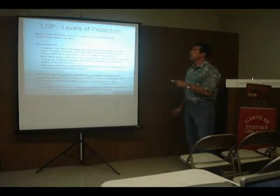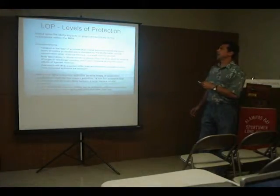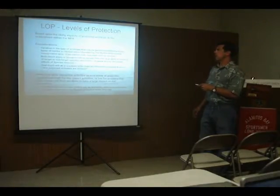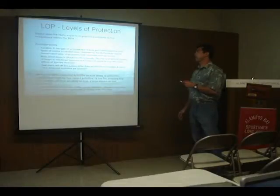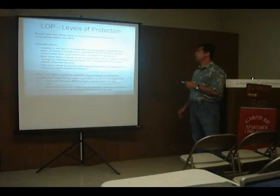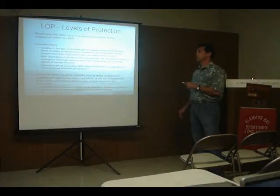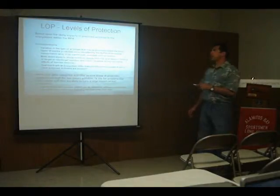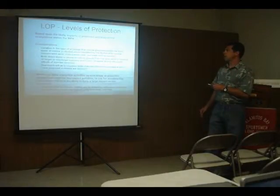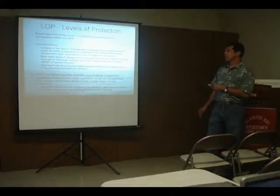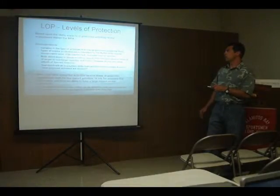Levels of protection are based upon the likely impacts of proposed activities to the ecosystems within the MPA. There is variation in the type of activities that may be permitted within the three types of marine protected areas identified by the MLPA: State Marine Conservation Area, State Marine Park, and State Marine Reserve. Both direct impacts — those resulting directly from gear use or removal of target or non-target species — and indirect impacts, which are ecosystem-level effects of species removal, are considered.